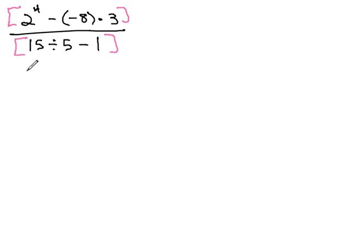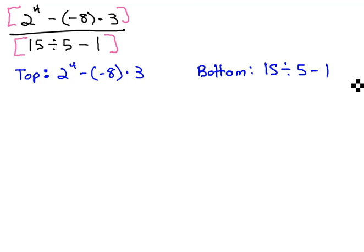So let's do that. Let's take a quick moment to focus on the top or the numerator, which is 2 to the 4th minus negative 8 times 3. And then when we're done with that, we'll come back and take a look at the bottom or the denominator, which is 15 divided by 5 minus 1.